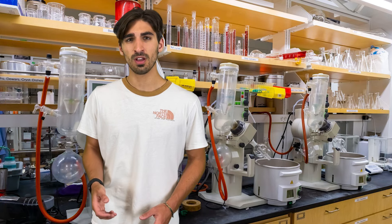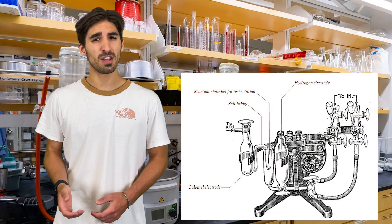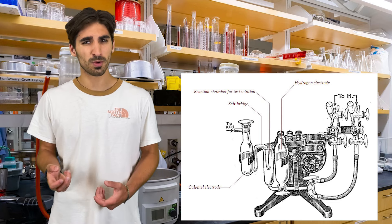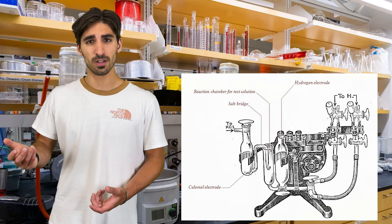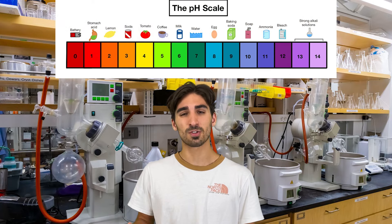In the early 1900s, a Danish chemist named S.P.L. Sorensen was studying how changes in the amount of hydrogen ions in a solution would affect proteins. Since accurately recording the amount of hydrogen ions in the solution was a really important part of the experiment, he created a new term for it, which resulted in the very first iteration of the modern-day pH scale.